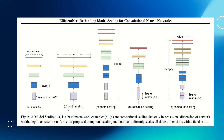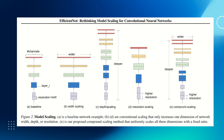If you see diagram B, we increase the width — meaning our channels increase — so the diagram expands in a horizontal way. Increasing channels makes each layer go wider. Diagram C is the depth scaling: depth means the layers, so you apply more layers. You see the layers increase while the channels stay the same, because we're only increasing depth, which is the number of layers.